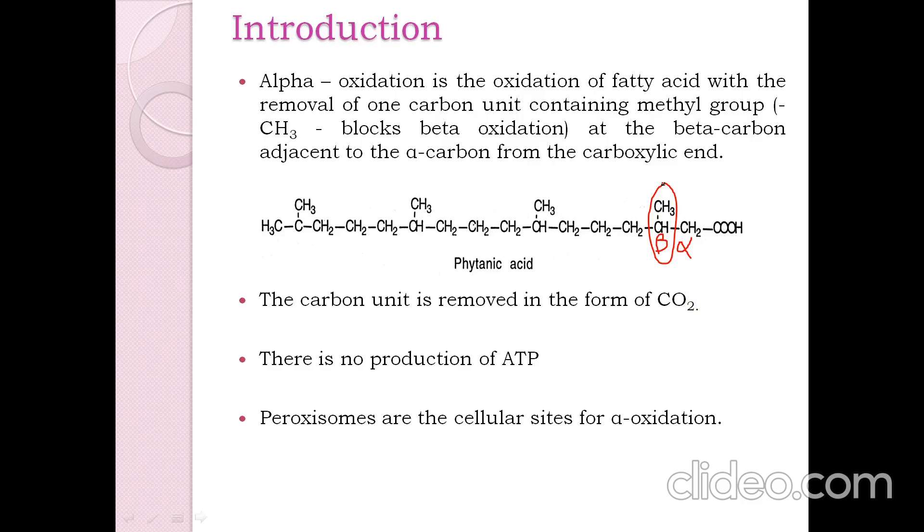There is no production of ATP and the peroxisomes are the cellular sites for alpha oxidation. The branched chain fatty acids are oxidized mainly in the brain and other nervous tissue and the carboxyl carbon is released as carbon dioxide.